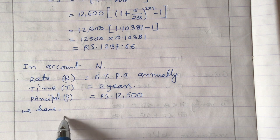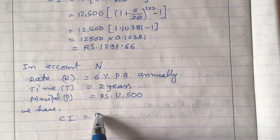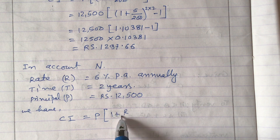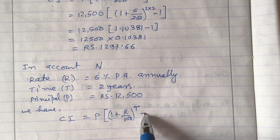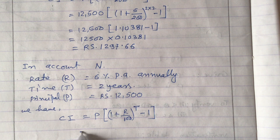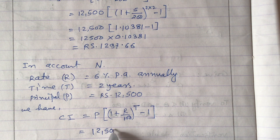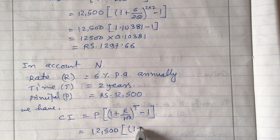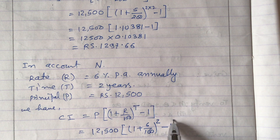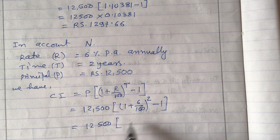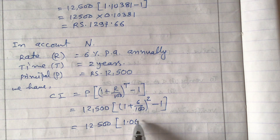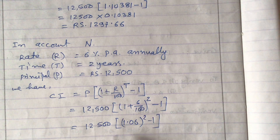For the annual compounding, the formula is: CI = P × [(1 + R/100)^T − 1] — we use R/100, not R/200, and the power is T, not 2T. Substituting: P is 12,500, R is 6%, T is 2, so we get 12,500 × [(1 + 6/100)^2 − 1] = 12,500 × [(1.06)^2 − 1].